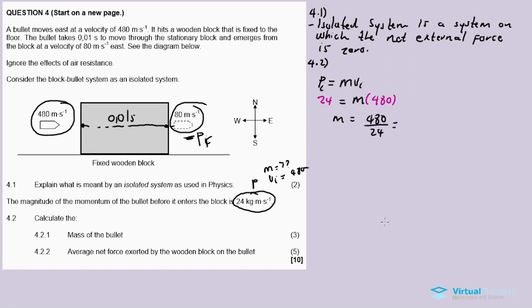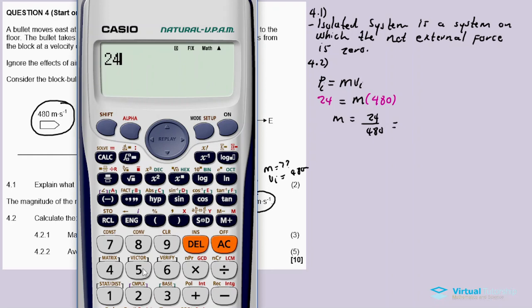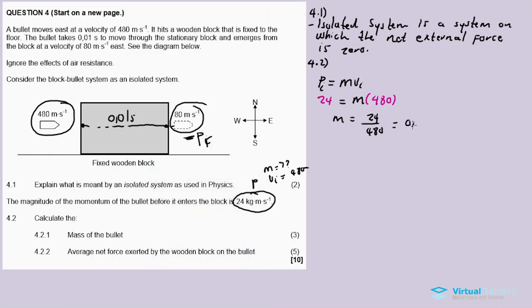Wait, what did I do? I'm dividing both sides. So 24 divided by 480 is equal to 0.05 kilograms. So this is the mass of the bullet. That's the answer for 4.2.1.